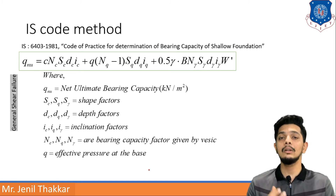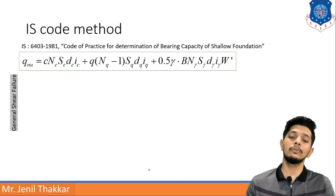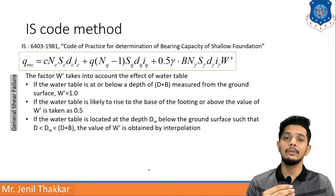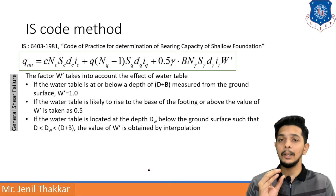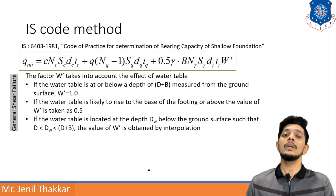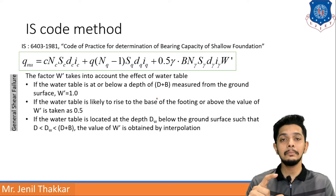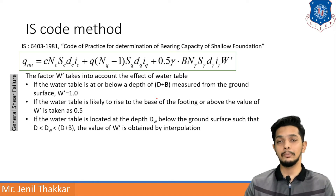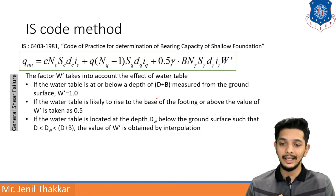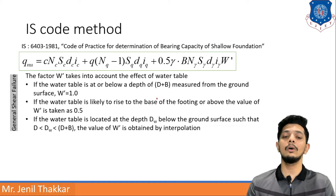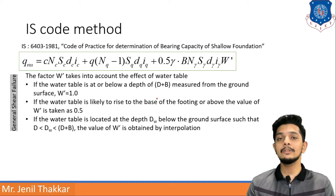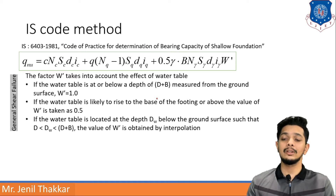This is the basic formula for general shear failure. For local shear and other cases we will discuss separately. First, the factor W dash accounts for the effect of the water table. If the water table is at or below a depth of D plus B measured from the ground surface — that is, at or below the base — W dash is taken as 1.0. If the water table is likely to rise to the base of the footing or above, W dash should be taken as 0.5.